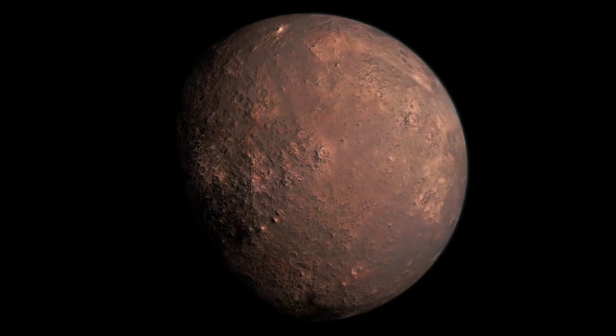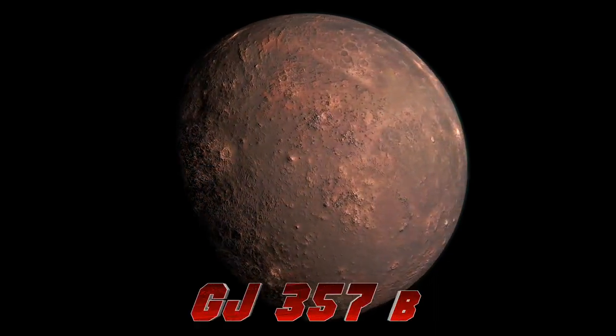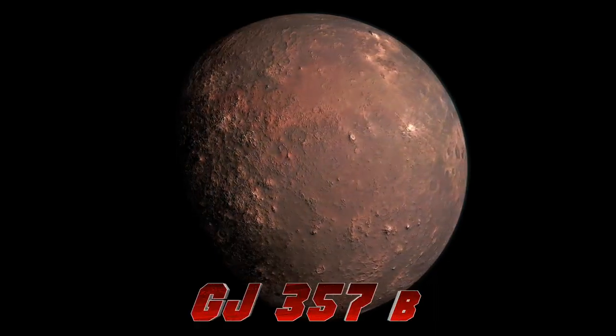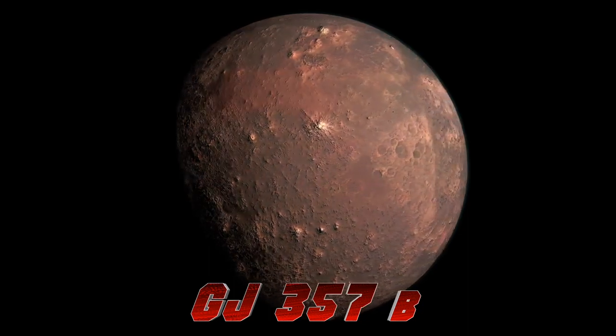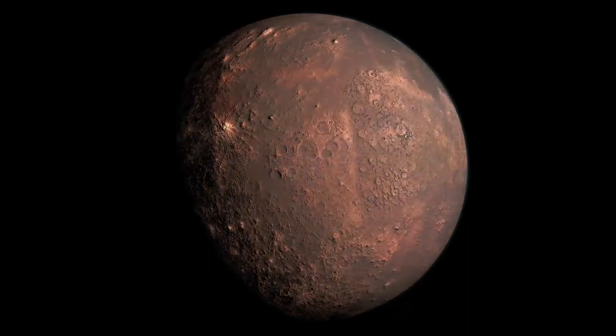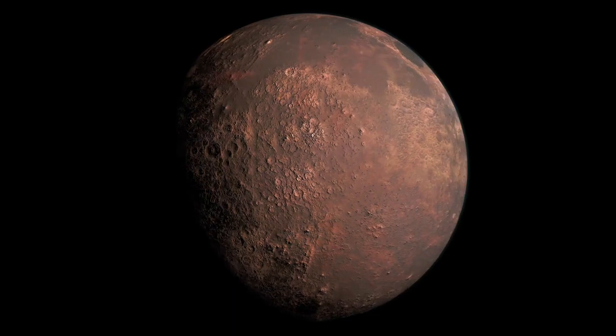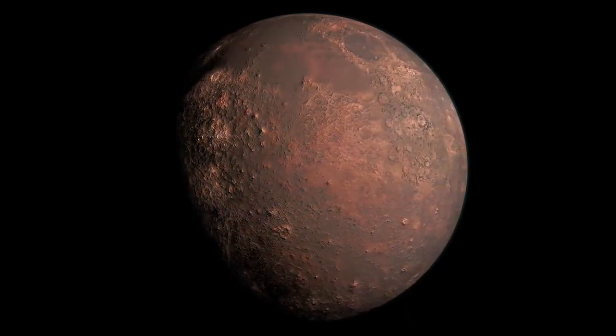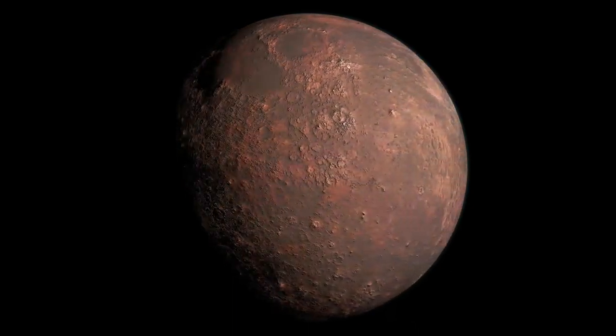The other exoplanet that TESS found was GJ357B, which is about 22% larger than Earth and orbits 11 times closer to its star than Mercury does our Sun. The atmosphere of the planet is around 490 degrees Fahrenheit.